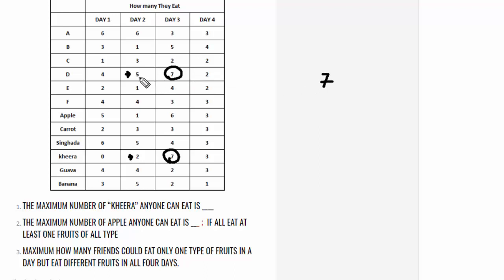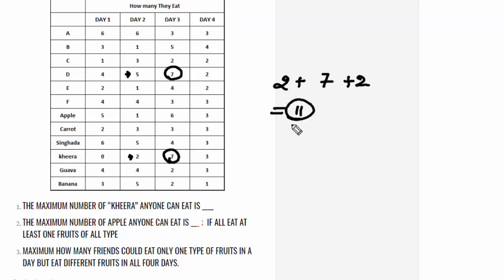You have to understand the language and solve the question. D has to eat 5 fruits, but available kheera is only 2, so D could eat 2 kheeras on day 2. The available kheeras on day 4 is 3, but D can eat only 2 fruits. So the maximum kheeras D can eat is 2, 7, 2 on days 2, 3 and 4 respectively. So the maximum kheera one can eat is 11, and the person is D. The answer to question number 1 is 11.